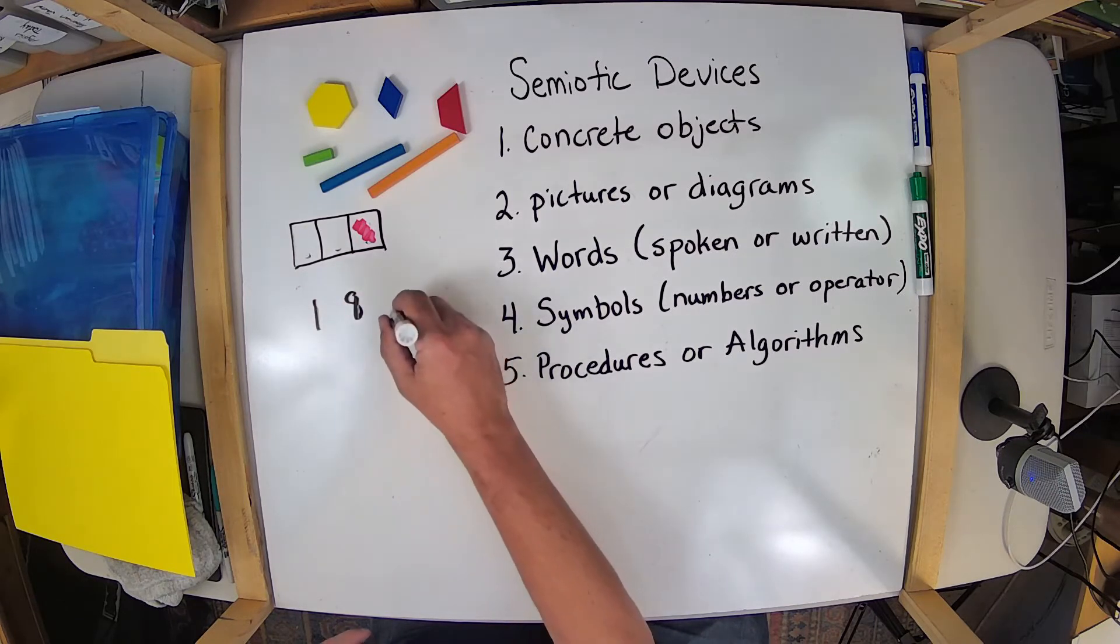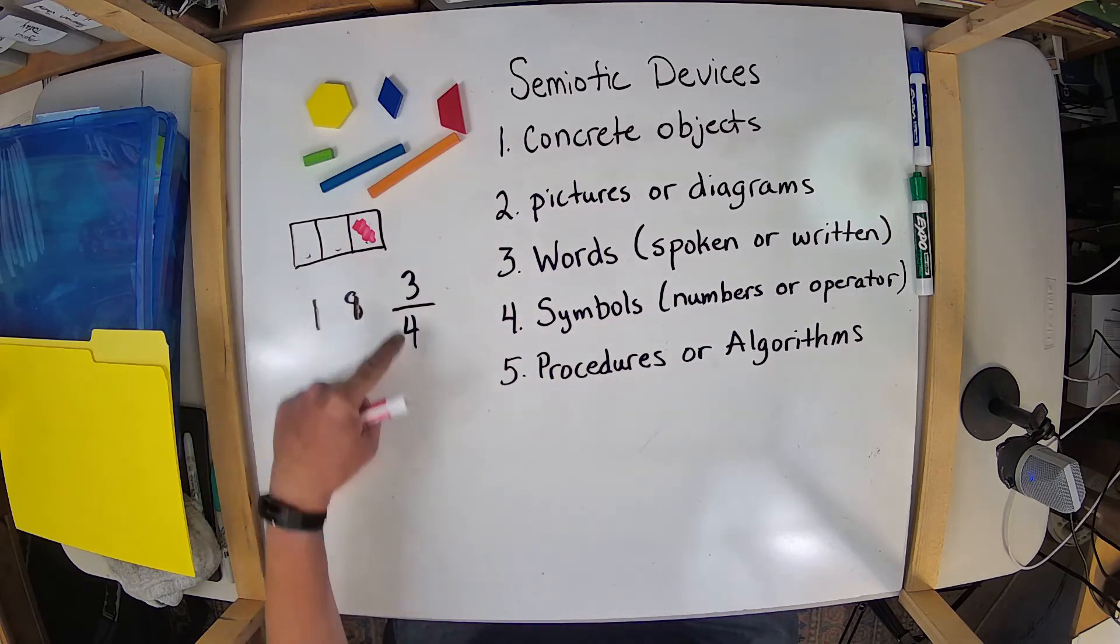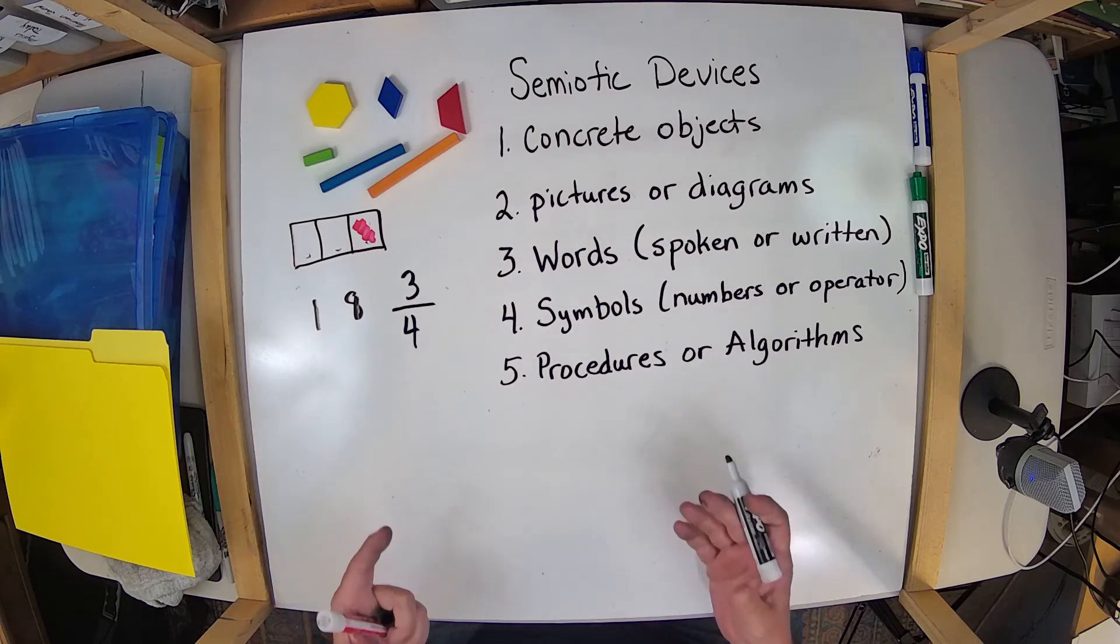But there are also operators, like a bar like this, and a three like that, and a four like that. When we write numbers in this specific way with that operator, it has a specific meaning. And so this operator or this dash, I mean, this line has a meaning. And so those are symbols and operators that we often use.